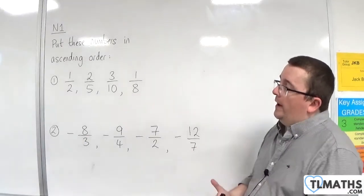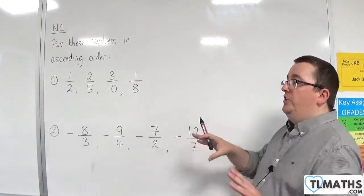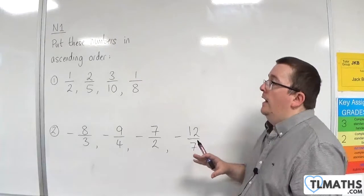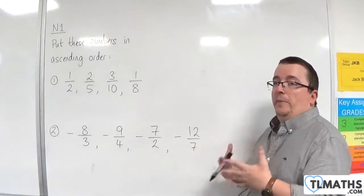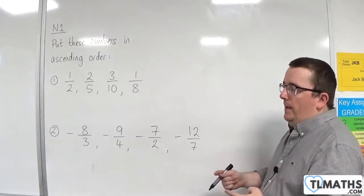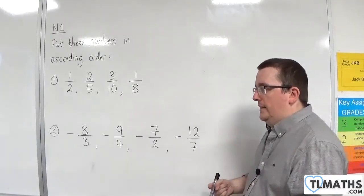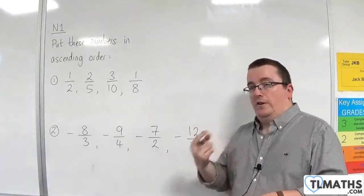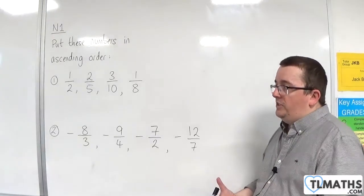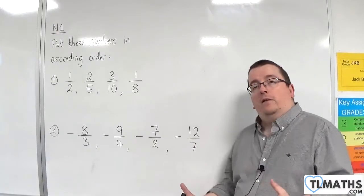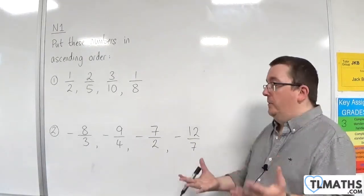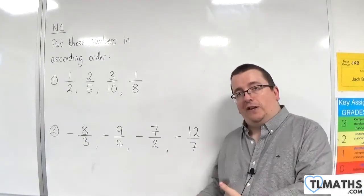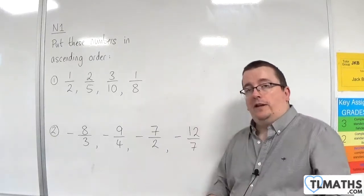So you need to find some way of either getting all the denominators the same, which in this case is quite fiddly, or you convert them all to decimals, which is going to be a lot easier. You should be able to convert all of these into decimals by hand, using either prior knowledge or the short division method. If you want to look at short division and how that works, I do that in the next section.